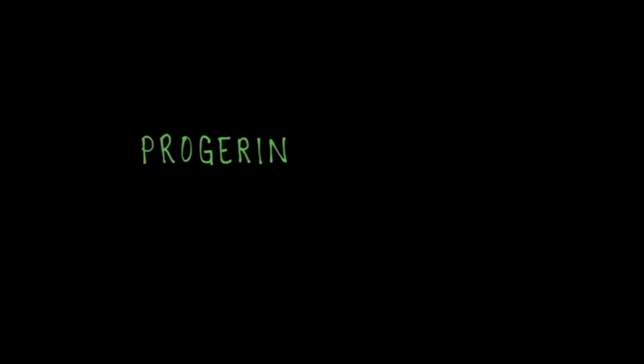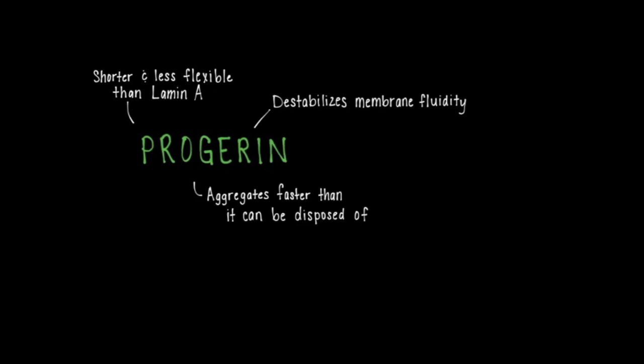The mutated progerin protein is shorter and less flexible than the lamin A protein and thus destabilizes membrane fluidity. The mutated protein aggregates faster than it can be disposed of and causes apoptosis, weakening the heart muscles and leading to other premature aging effects.